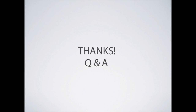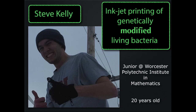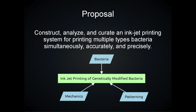We'll go to one more presentation and then take questions at the end for the whole group. Next up is Steve Kelly — an undergrad at WPI in math. His project was on inkjet printing, and particularly he wanted to understand how to inkjet print bacteria. They broke that down into three aspects: bacteria, mechanics, and patterning.